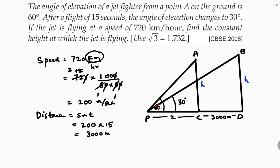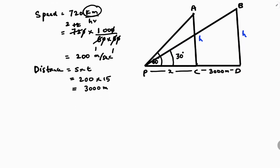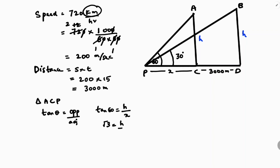Now I'll take triangle ACP. Using the tan ratio — tan theta equals opposite over adjacent — tan 60 equals h over x. Since tan 60 is √3, we get √3 = h/x, therefore h equals √3·x. This is equation 1.